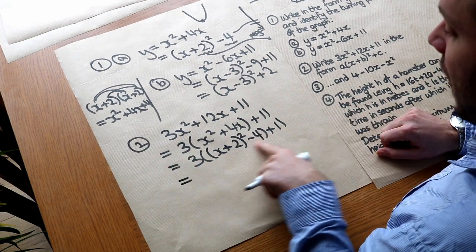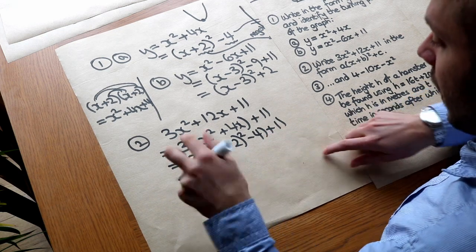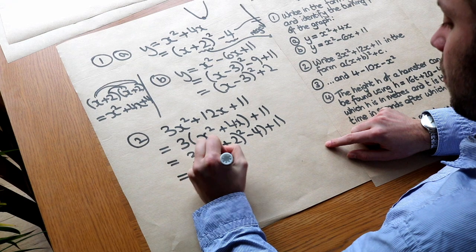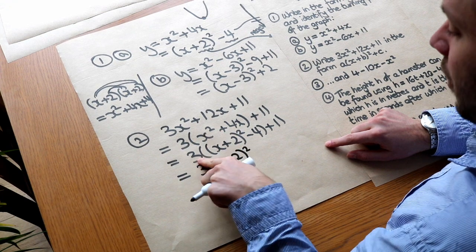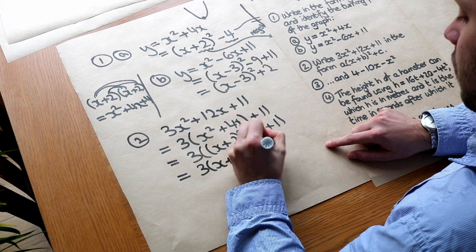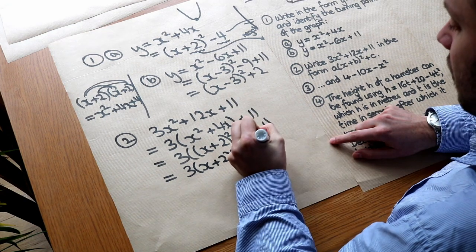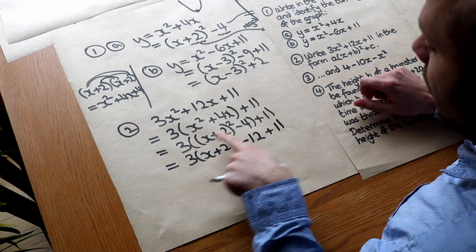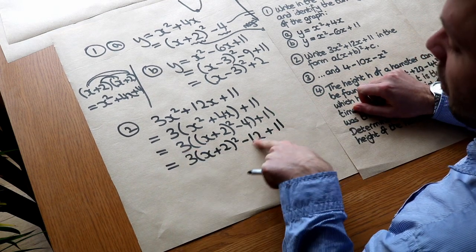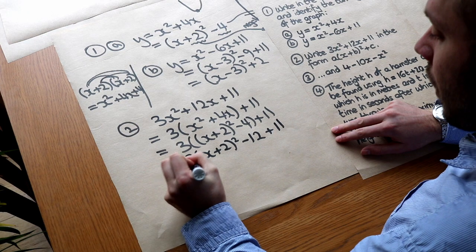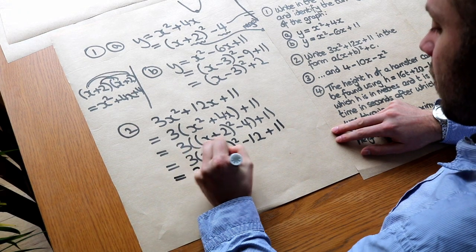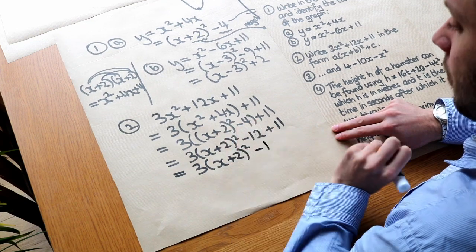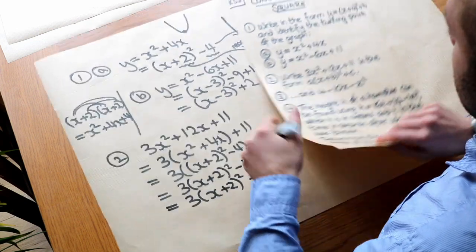The final step is to expand the outer bracket: 3 times x plus 2 squared gives 3 times x plus 2 squared, and 3 times minus 4 gives minus 12. A very common mistake is forgetting to multiply the minus 4 by 3 and just using minus 4. Adding the plus 11 outside and collecting like terms: minus 12 plus 11 is minus 1, giving 3 times x plus 2 squared minus 1.